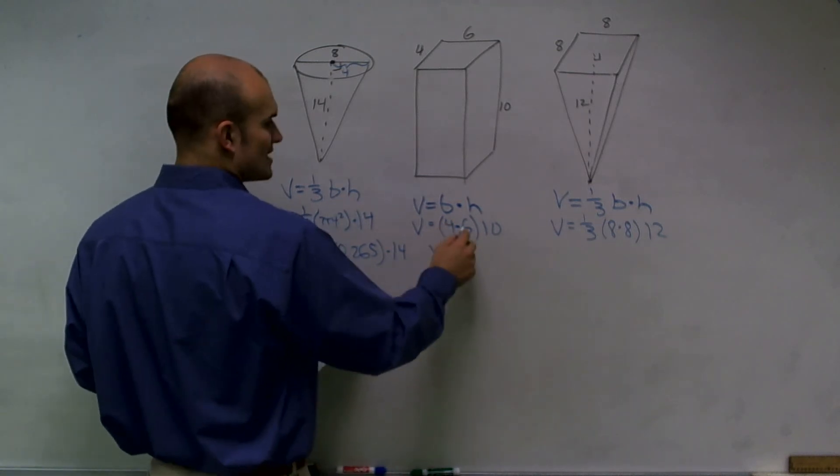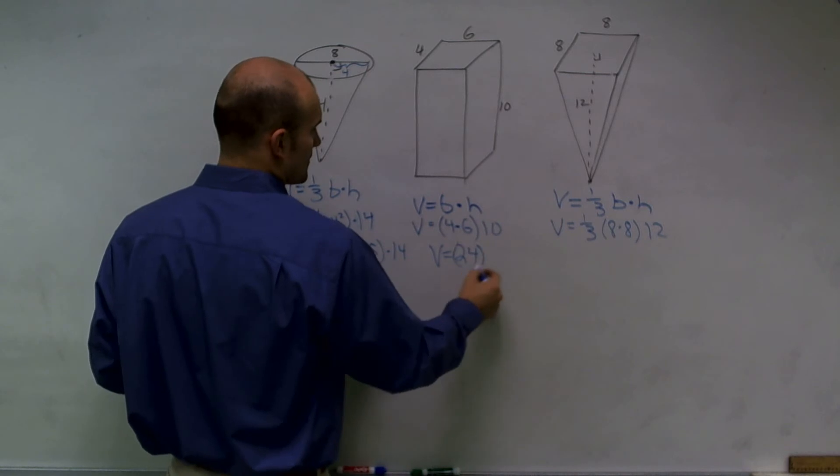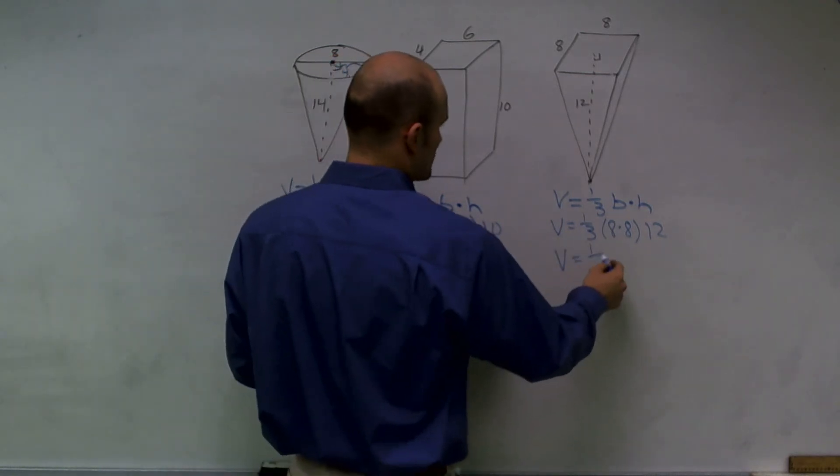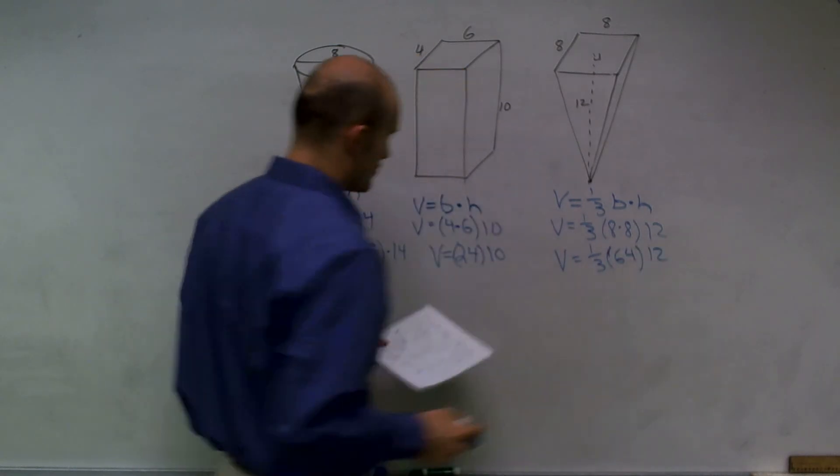So, volume here, four times six is twenty-four times ten. And here, volume equals one-third, sixty-four times twelve.